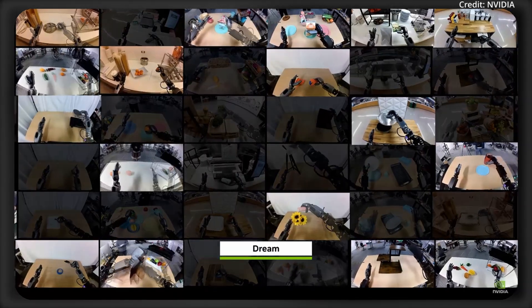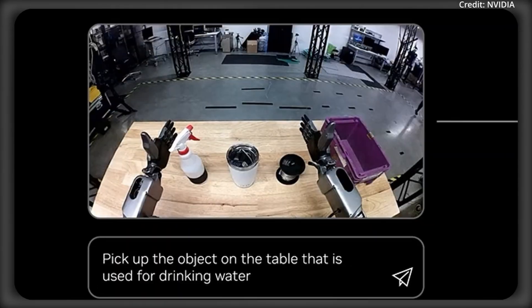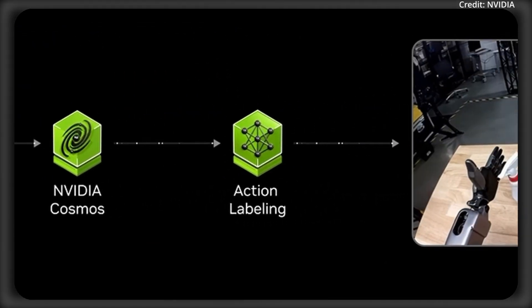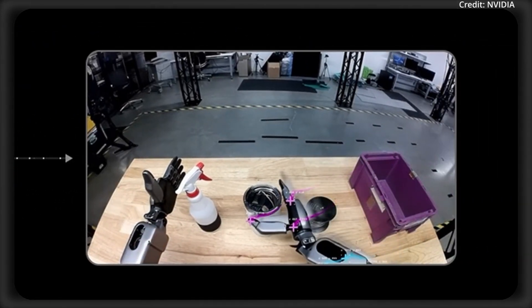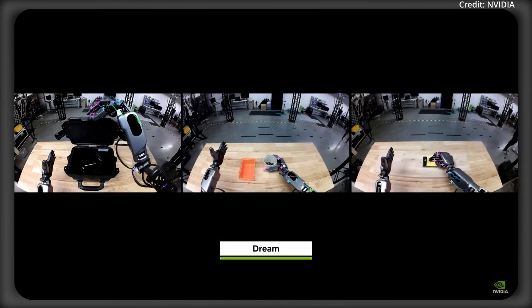And these videos are then filtered by Cosmos Reason to produce action tokens, which train the robots. Then, a single image with new instructions can be fed into Cosmos, and it spits out the model's dreams, which are brand new synthetic videos of the robot's future actions.